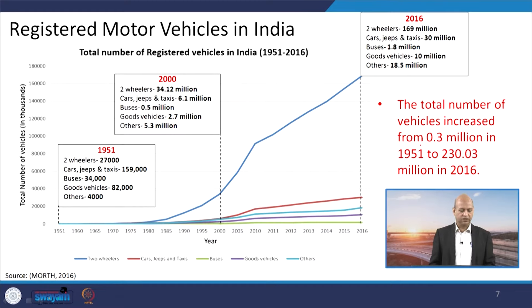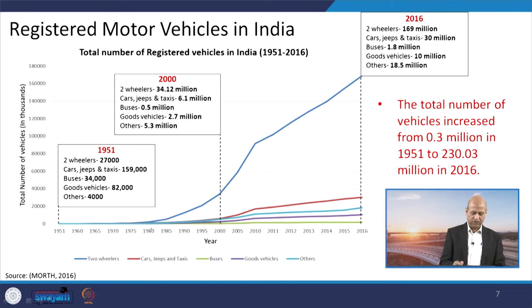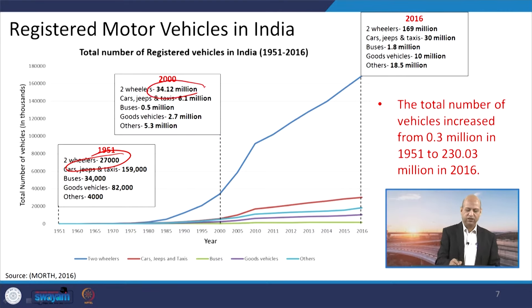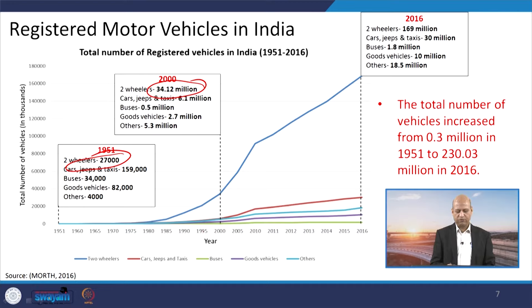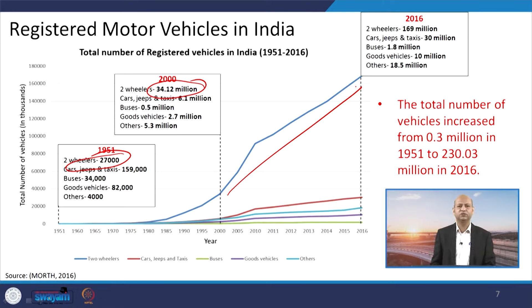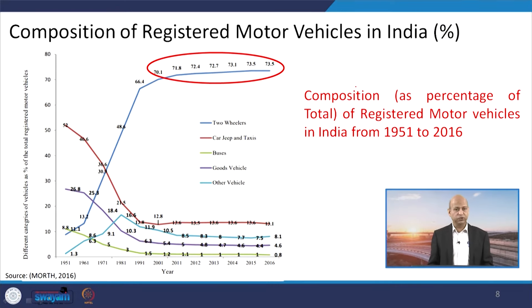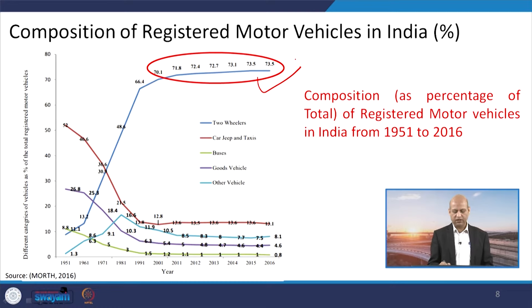Looking at registered motor vehicles in India, in 1951 the number of two-wheelers was quite low at only 27,000, but by 2000 it became 34 million. After the opening up of the economy from 1992 onwards, there was tremendous growth in all vehicle categories, but two-wheelers saw the largest growth among privately owned vehicles. This means two-wheelers now constitute a much larger composition than other vehicle categories, whether cars or buses.